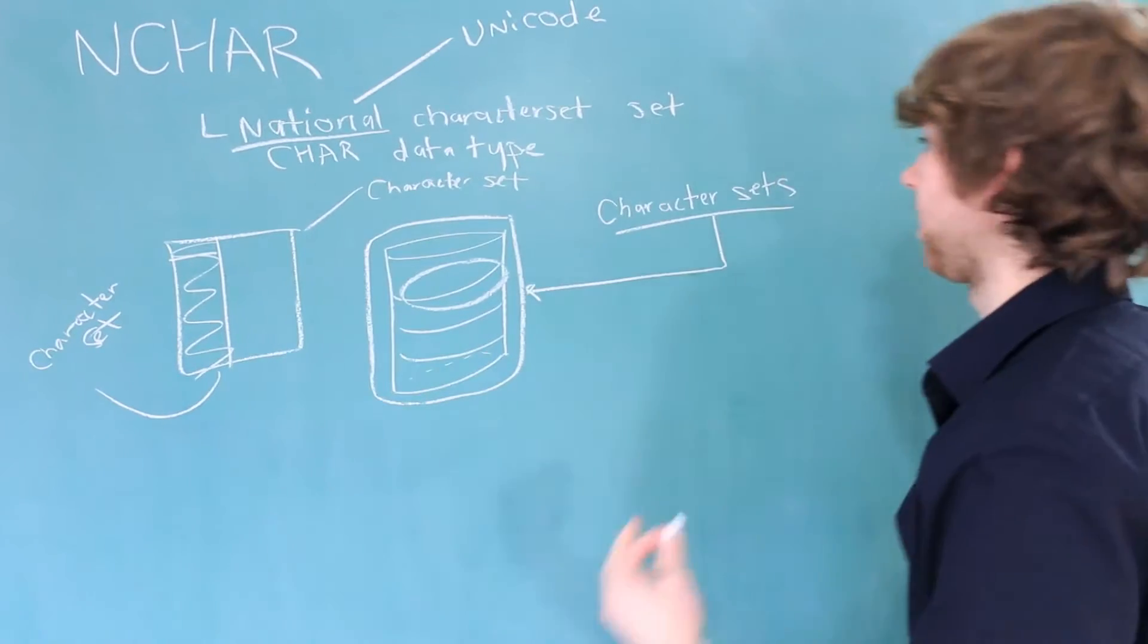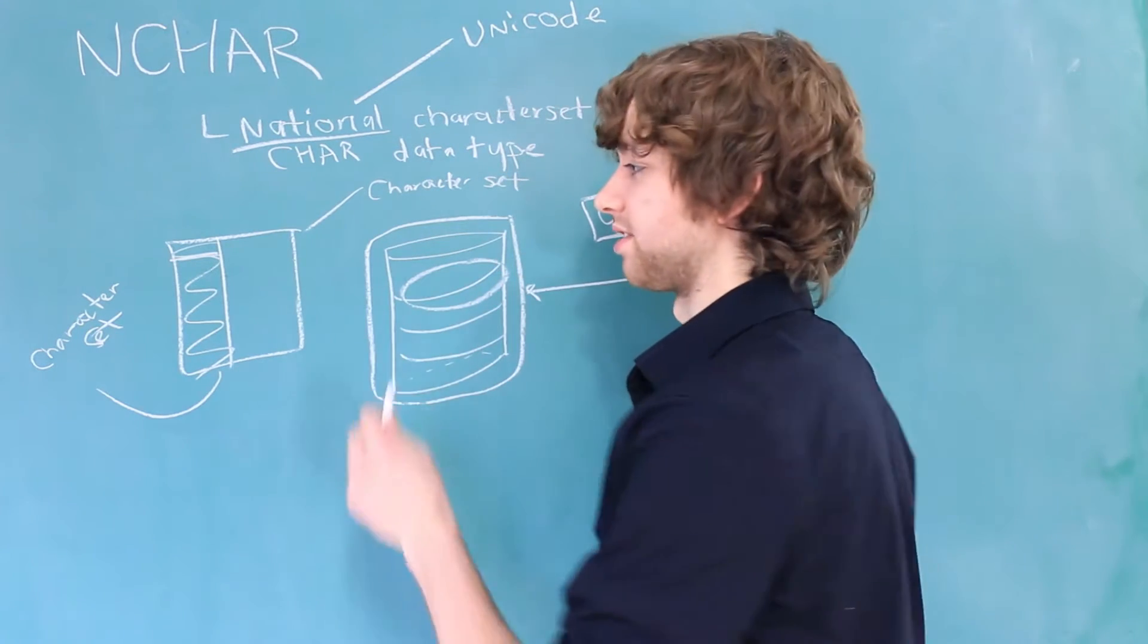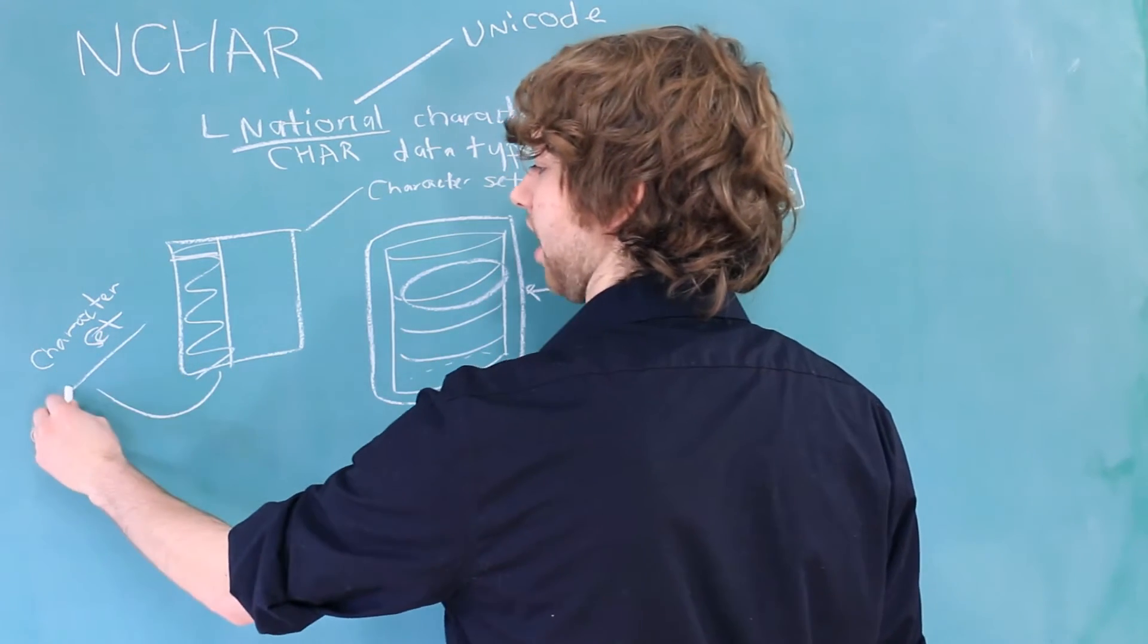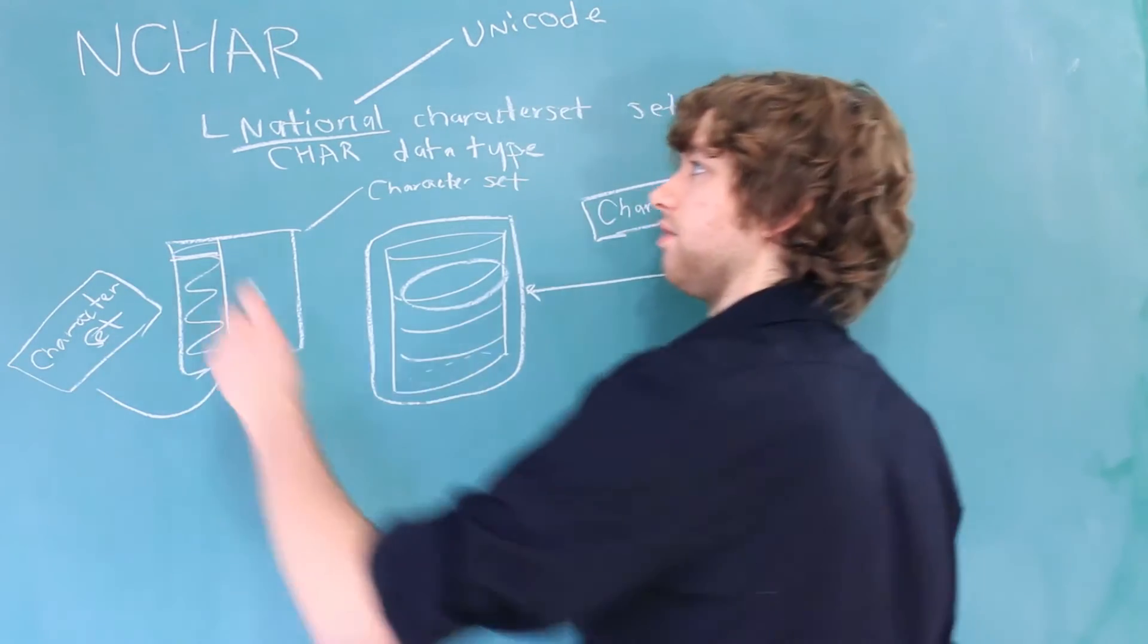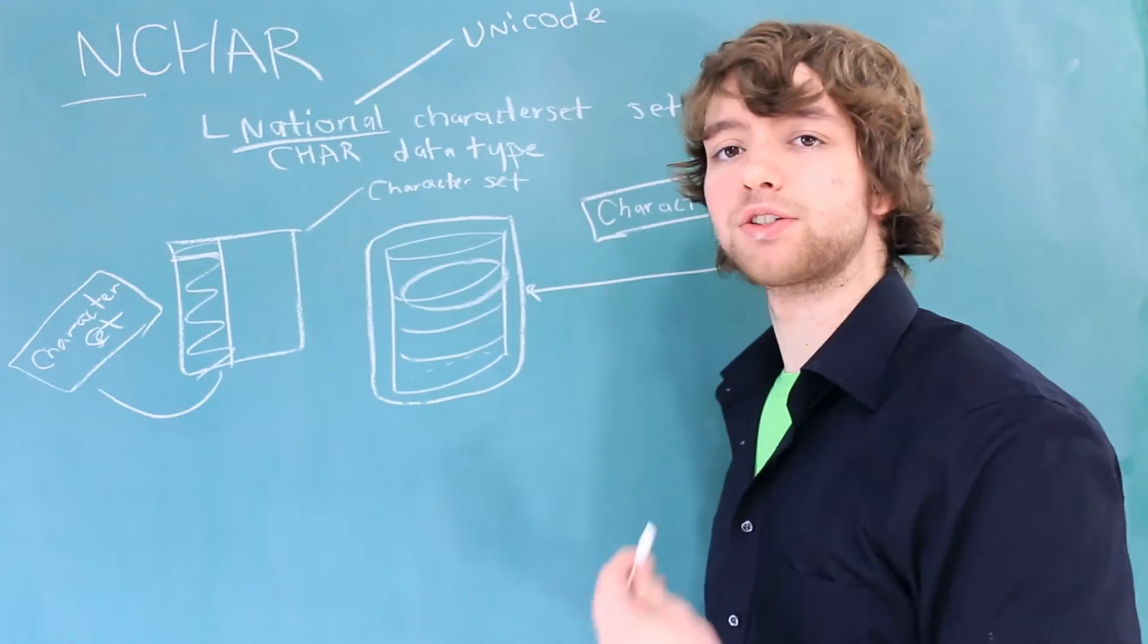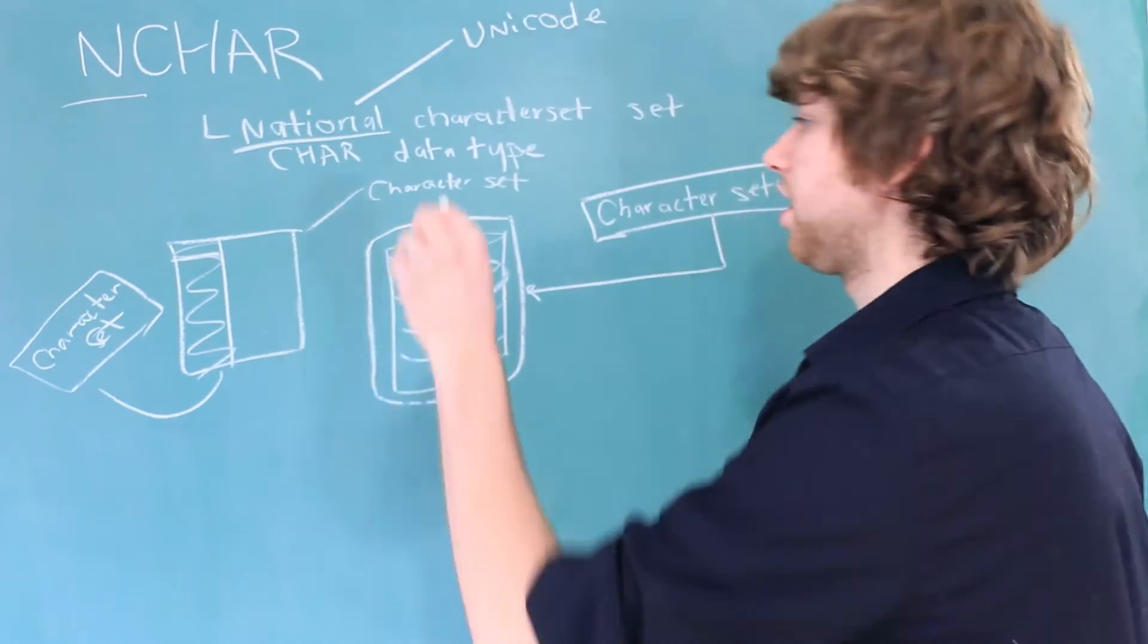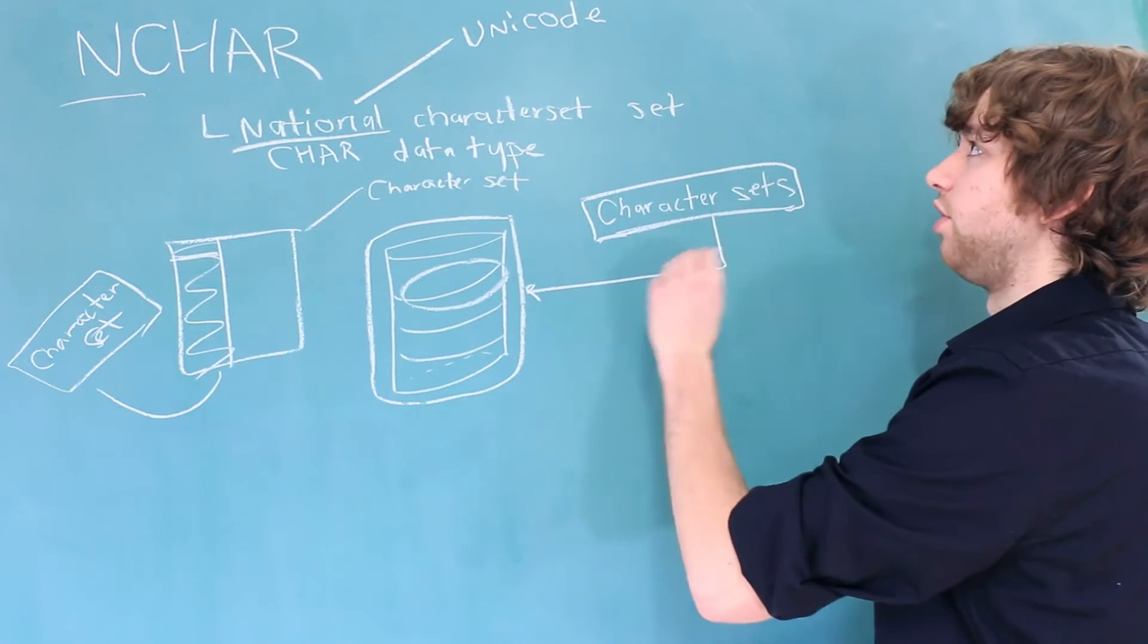Oracle only has character sets available at the database level. Now there is something available to us that's similar to having a character set at the column level, but slightly different. And that is where the N data types come in. The N data types allow us to store Unicode in a column, even if the database character set is not Unicode.